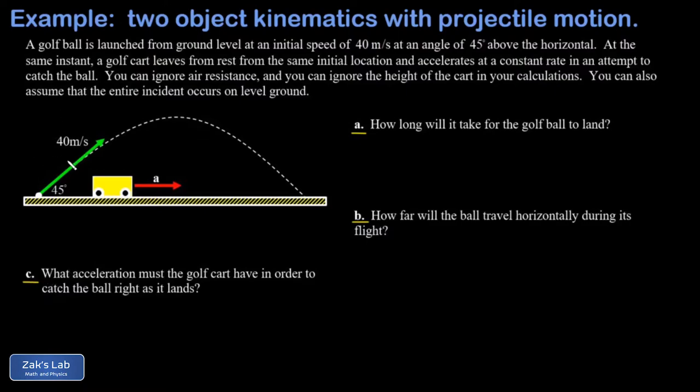Before I do anything else, I'm just going to get velocity components on my initial velocity. V naught x is 40 cosine 45, and into three sig figs that comes out to 28.3 meters per second.